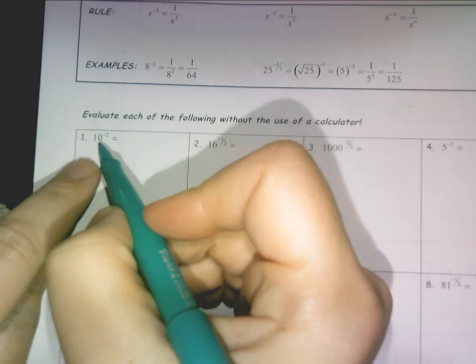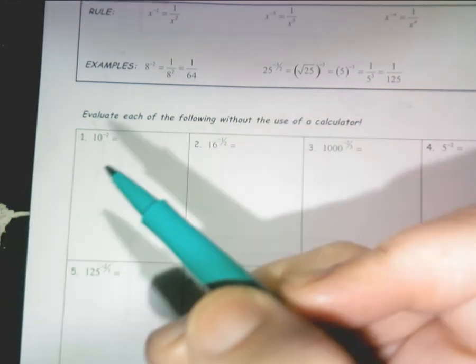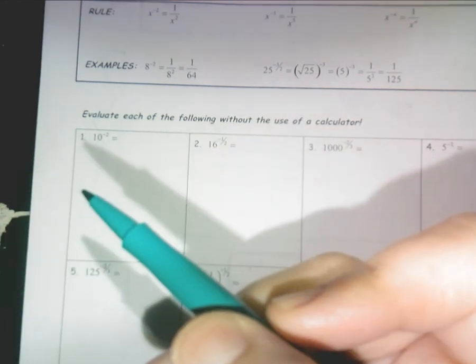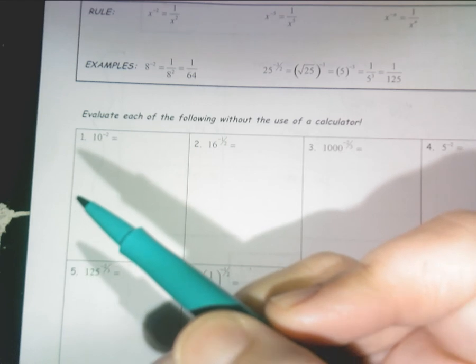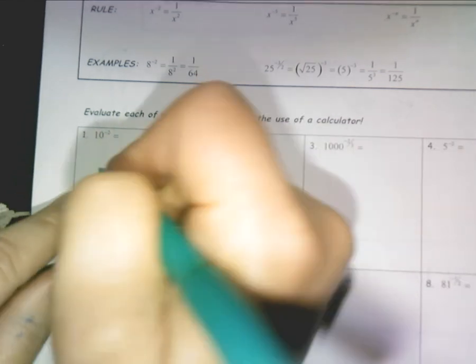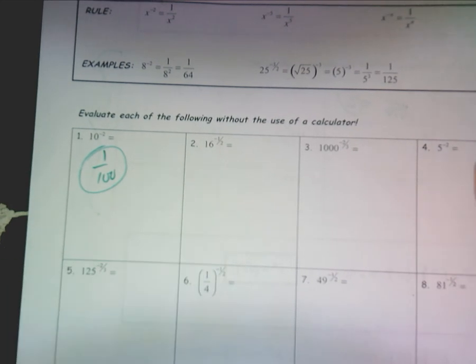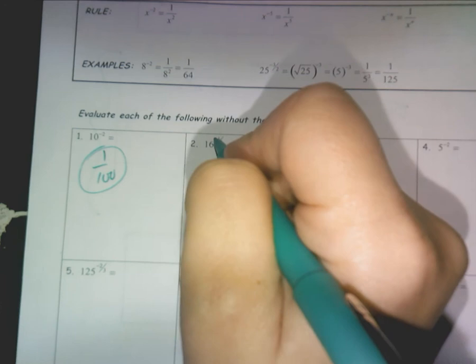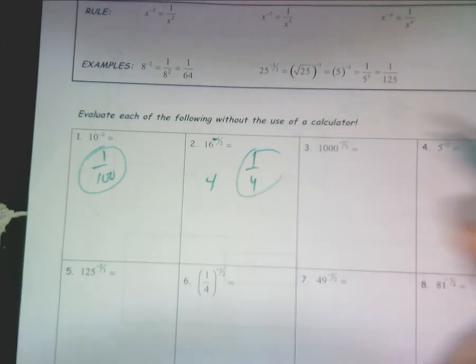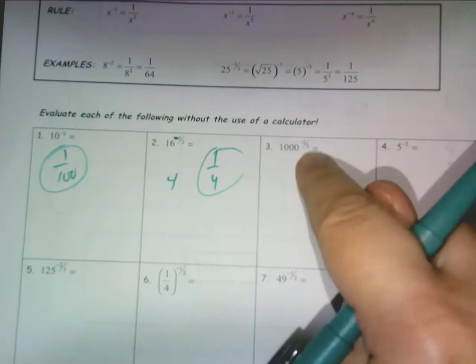Like, number one. Pretend it's positive. What's 10 squared? 100. But it's to the negative two, so flip it. One over 100. Pretend it's positive. What's 16 to the one half? What's 16 to the one half? Four, right? It's the square root of 16. Four. But because it's negative, flip it. One fourth. That's it. Let's do a harder one here. I'll do this one.